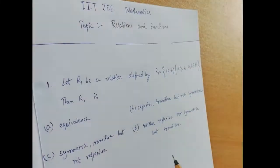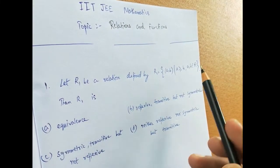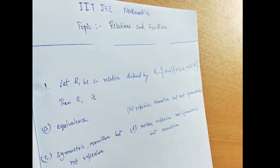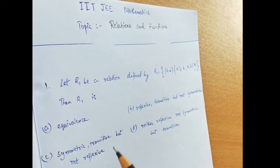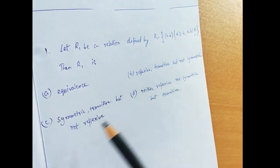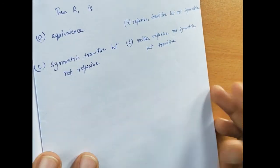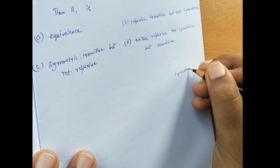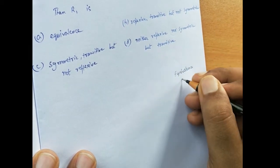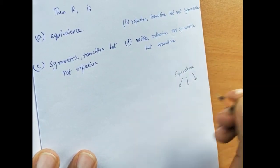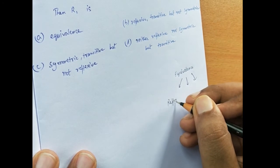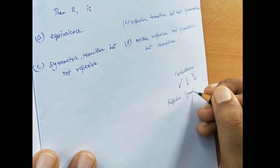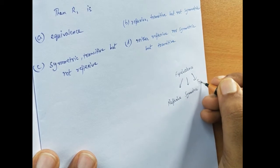The first question has a relation given as an ordered pair in the set of real numbers, and you have to check whether the relation is an equivalence relation or not. An equivalence relation is made up of three different types: a reflexive relation, a symmetric relation, and a transitive relation.